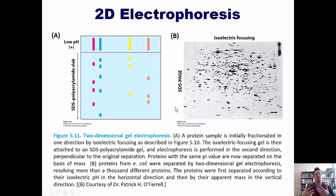So here's how it works. Looking at this picture from our book, you can see in figure A that a protein sample is initially fractionated, separated out, in one direction by isoelectric focusing. The isoelectric focusing gel is then attached to an SDS polyacrylamide gel and electrophoresis is performed in the second direction, perpendicular or 90 degrees to the original separation. Proteins with the same PI values are now separated on the basis of mass, because that's what SDS-PAGE does.